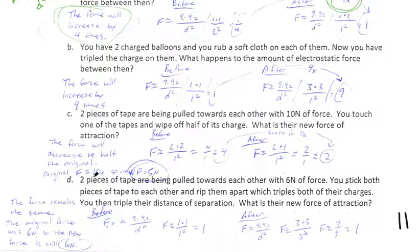With D, we've got two pieces of tape being pulled towards each other with six newtons of force. Stick both pieces of tape to each other, rip them apart, which triples both of their charges. You then triple their distance of separation. What's their new force of attraction? We don't really even have to worry about this six newtons until the very end. Actually, looking at part C, we've got to do something very similar as well. Here's why.